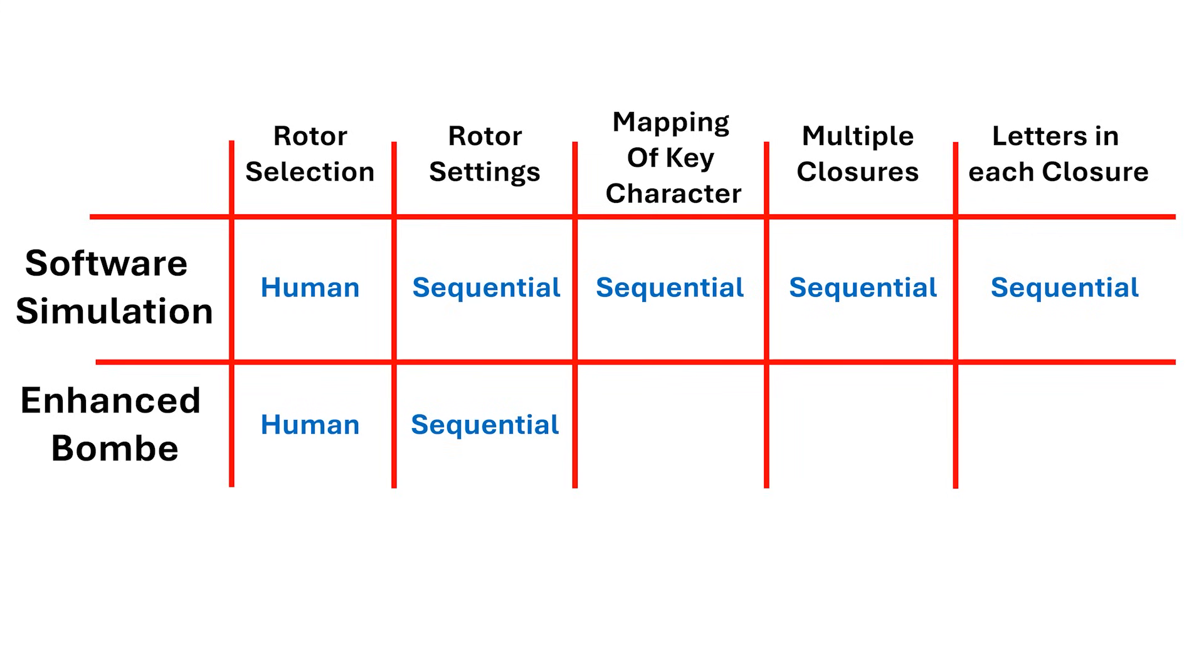If we go back to this table, we see that searching for the key character plugboard mapping was done in parallel, as was assessing multiple closure loops, and all the letters contained within a closure.